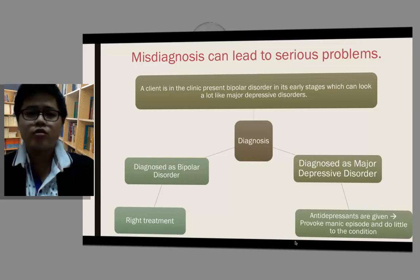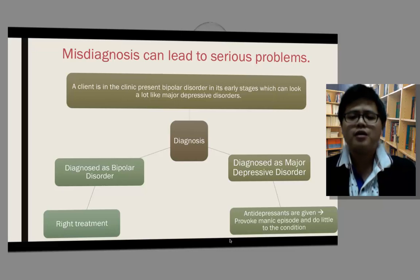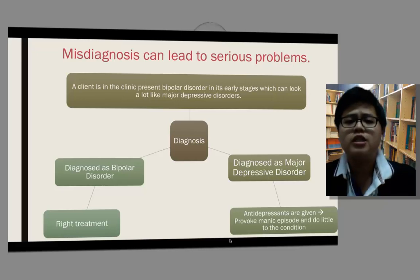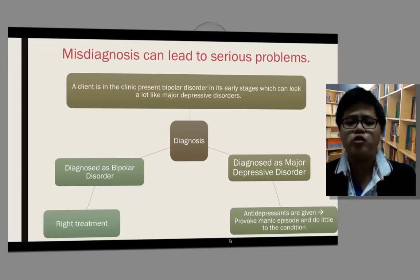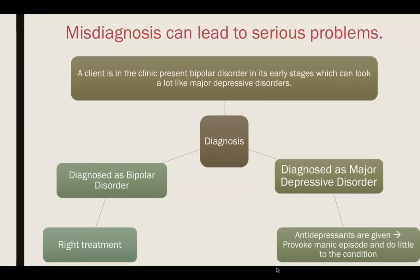What about misdiagnosis? Misdiagnosis can lead to serious problems. If the clinician diagnoses the client as living with major depressive disorder, antidepressants might be given and it might provoke manic episodes and do little help to the condition. That's the importance of correct diagnosis, because diagnosis can lead to appropriate treatment and prognosis of the disease.